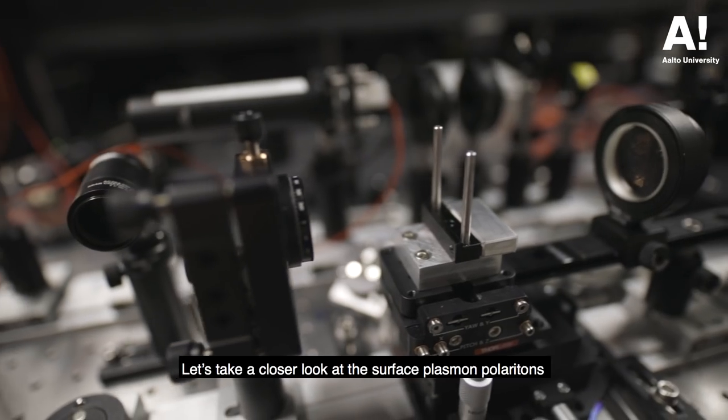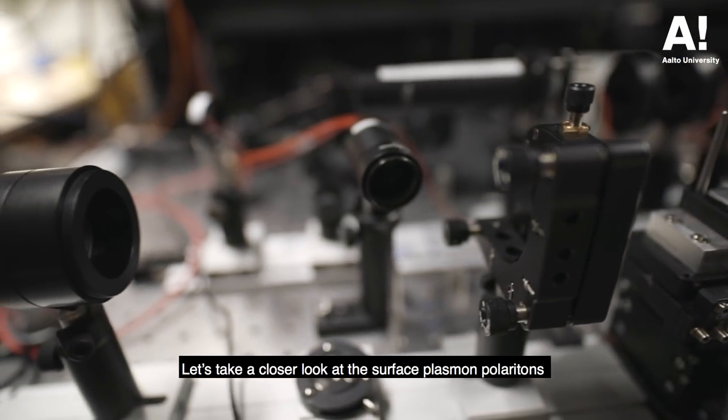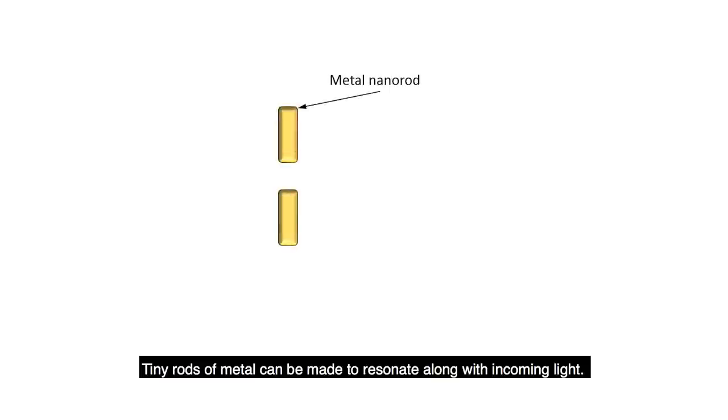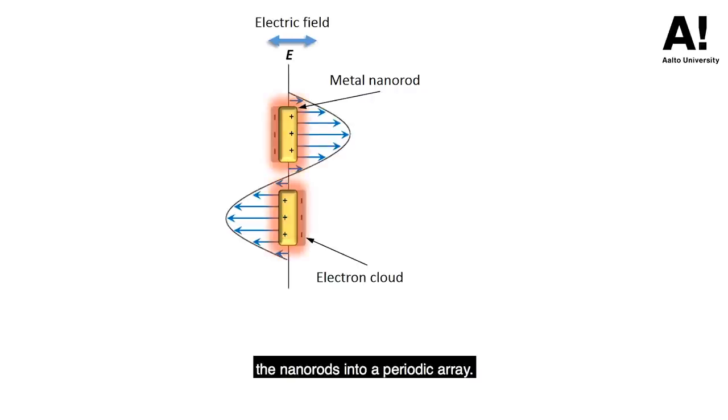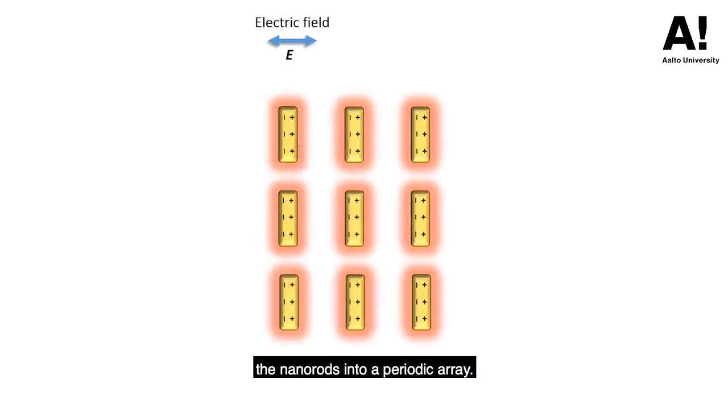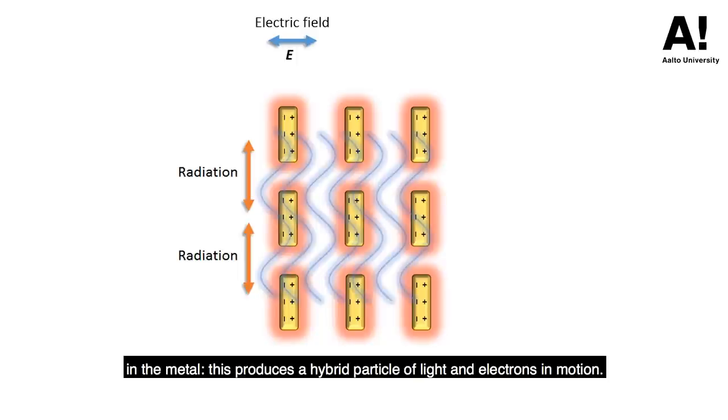Let's take a closer look at the surface plasmon polaritons. Tiny rods of metal can be made to resonate along with incoming light. This so-called surface plasmon resonance can be tailored by assembling the nano rods into a periodic array. Light gets trapped between the nano rods and the light is coupled with the electrons in the metal. This produces a hybrid particle of light and electrons in motion.